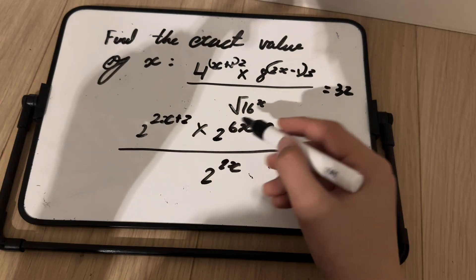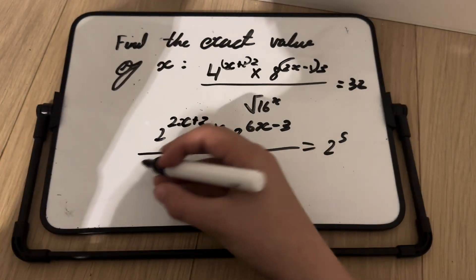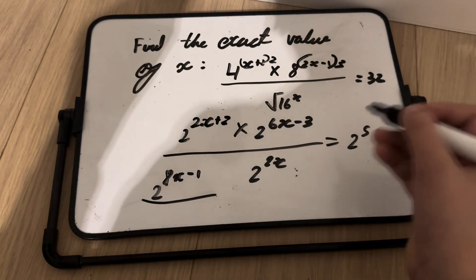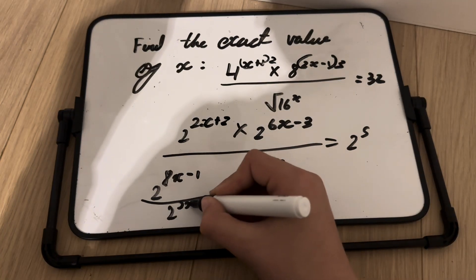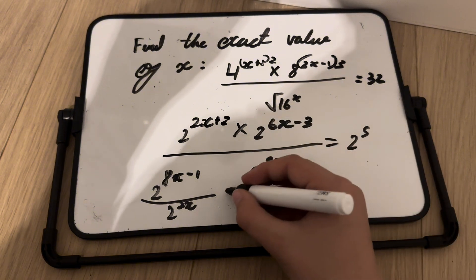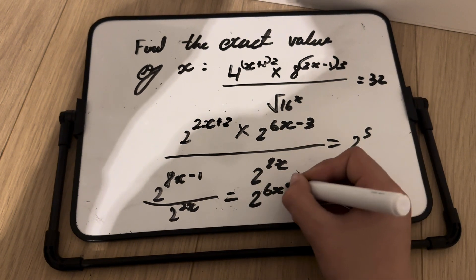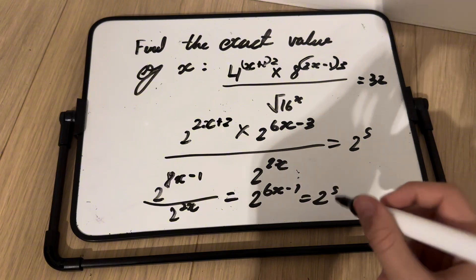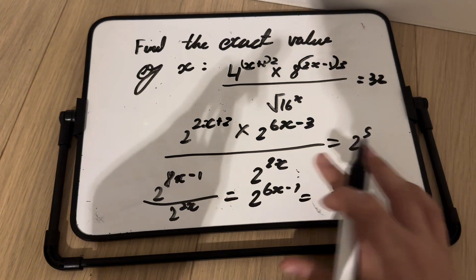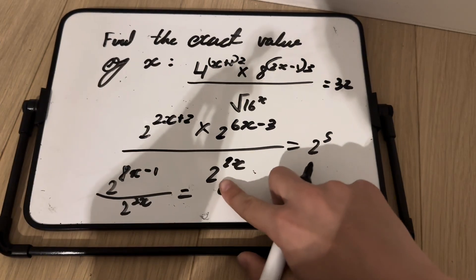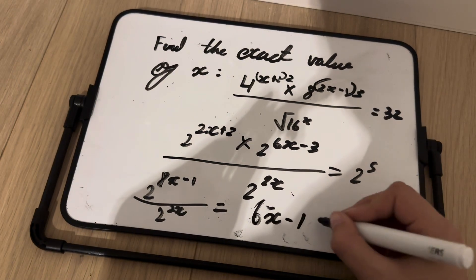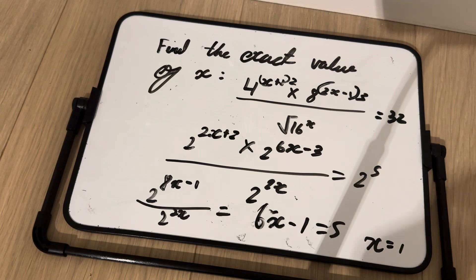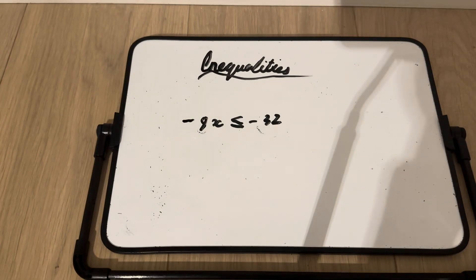When multiplying terms with the same base, you add the indices. So the numerator gives 2^(2x+2) × 2^(6x−3) = 2^(8x−1). Dividing by 2^(2x), we subtract indices: 2^(8x−1−2x) = 2^(6x−1). Setting 2^(6x−1) = 2^5, we get 6x − 1 = 5, so 6x = 6 and x = 1.